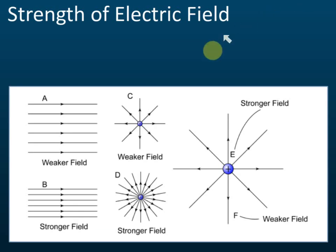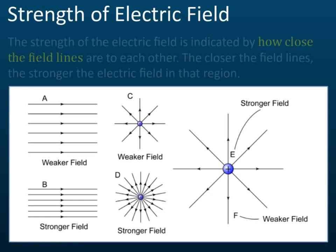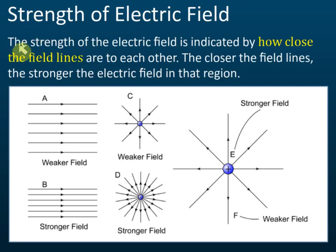The next thing to know is the strength of the electric field. The strength is indicated by how close the field lines are to each other — the closer the field lines, the stronger the electric field in that region. For example, in region A the lines are not very close together, but in region B the lines are very close, so the field in region B is stronger than in region A.